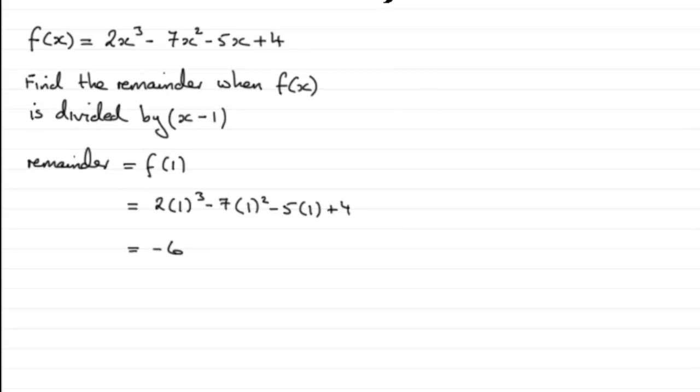Now, the other way then, I said, was algebraic long division. What we do is we divide x - 1 into f(x). And that gives us 2x³ here, minus 7x², minus 5x, plus 4.